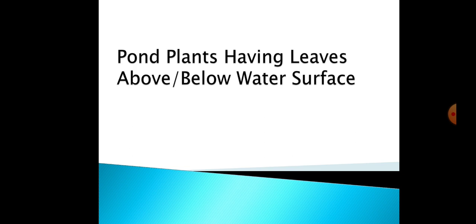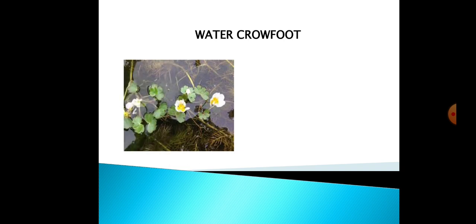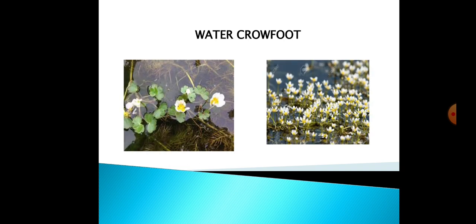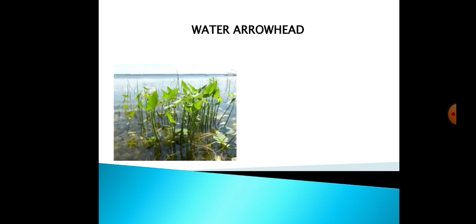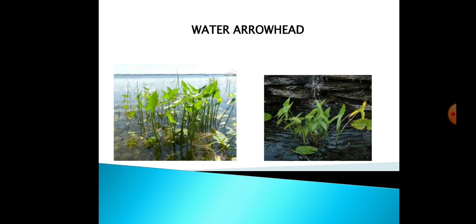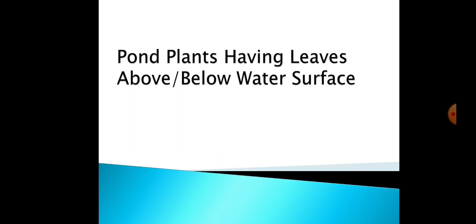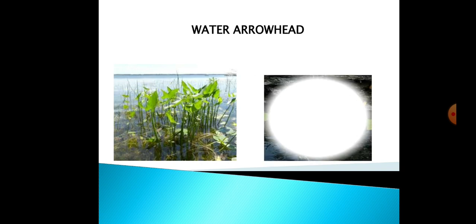The next category includes plants that have some leaves above the water surface and some below. The first example is water crowfoot — part of its leaf is under the water and part is above. The second example is water arrowhead, which also has leaves both above and below the water surface.